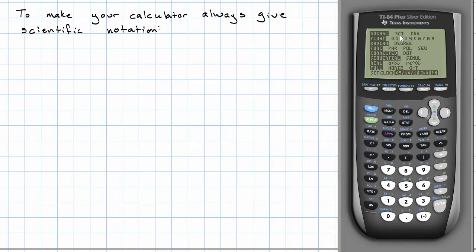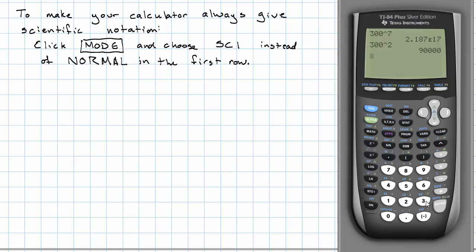We are, however, going to be using scientific notation. So, to select that, I hit the right arrow, and then to choose it, I hit enter. Let's get out of here. Second quit. And now if I put in 300 to the second power, it gives me my answer in scientific notation.